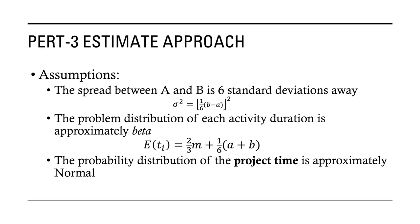Before we actually go to solving problems where the duration is now probabilistic and not deterministic, we need to understand the different assumptions for the model. First, the spread between your optimistic and pessimistic is six standard deviations away. Mathematically speaking, the variance — sigma squared — is equal to the quantity (1/6)(B minus A), squared. B minus A is the spread, and dividing by six gives us the six standard deviations away.